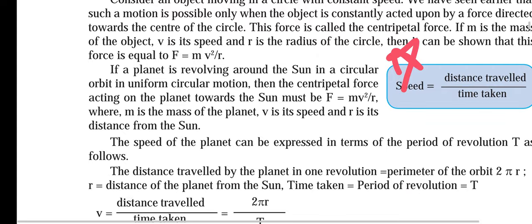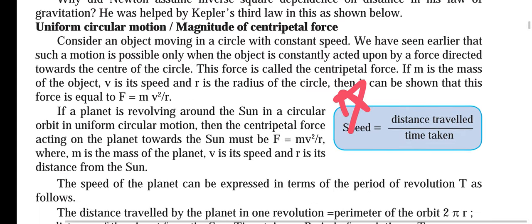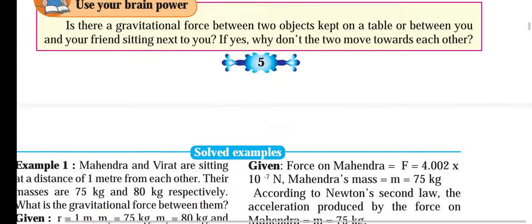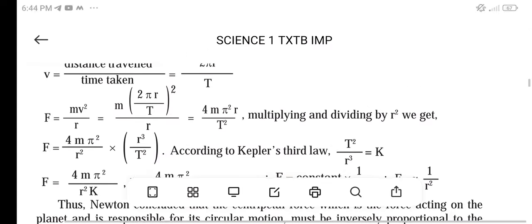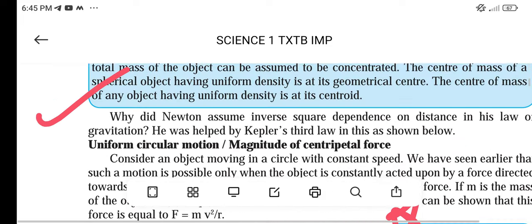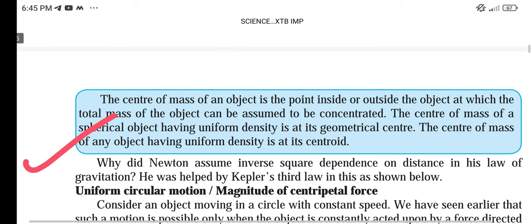On page number 5 we have the speed formula — distance traveled upon time taken. Make sure you don't miss it. See the blue box on the top of that page and star the blue box.